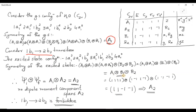We have to find the direct product of A1·B1·B2. From the character table, the characters for A1 are 1,1,1,1; for B1 they are 1,−1,1,−1; and for B2 they are 1,−1,−1,1. Multiplying: 1·1·1=1, 1·(−1)·(−1)=1, 1·1·(−1)=−1, 1·(−1)·1=−1. So the resulting characters are 1,1,−1,−1, which corresponds to A2 symmetry. Therefore, the symmetry of the excited state is A2.